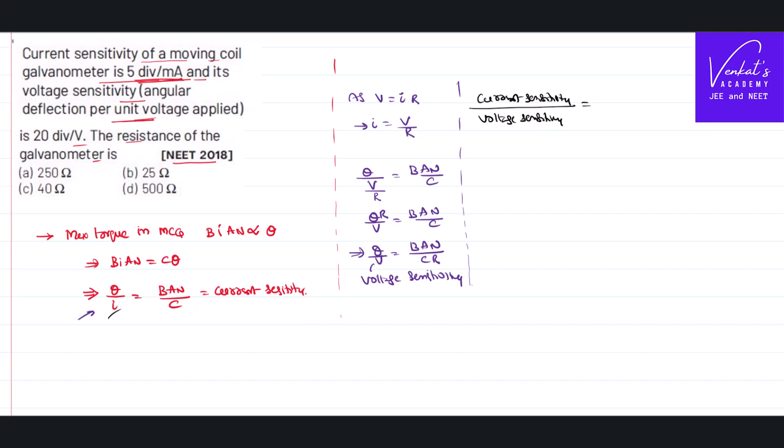Current sensitivity is theta by I. Voltage sensitivity is theta by V. So theta by I is B*A*N by C, and theta by V is B*A*N by C*R. When we divide: B*A*N by C times C*R by B*A*N. B, A, N, and C cancel out. This gives us R.